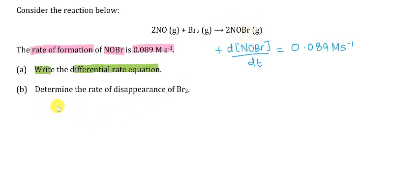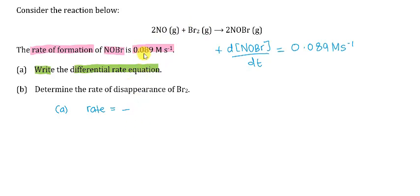For the differential rate equation, rate equals — for reactants, we know that reactants will decrease with time, so we are going to use a negative sign, and also the stoichiometric coefficient. We have 2 moles of NO here, so we write it as 1/2 times d[NO]/dt.